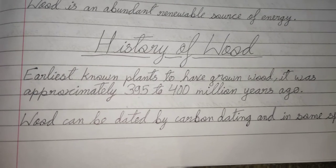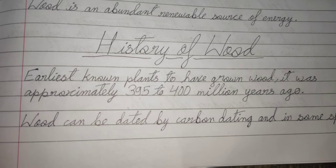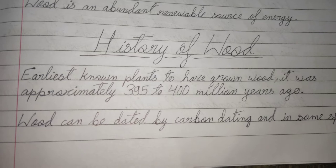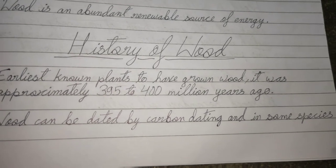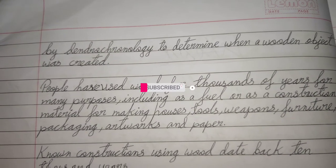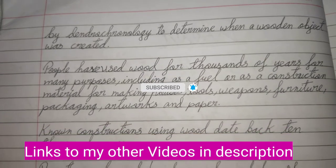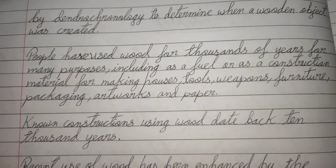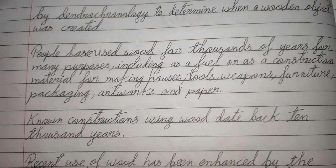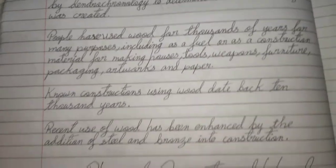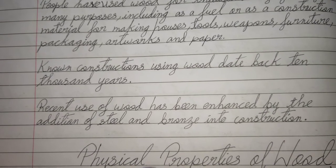The earliest known plants to have grown wood existed approximately 395 to 400 million years ago. Wood can be dated by carbon dating and, in some species, by dendrochronology to determine when a wooden object was created. People have used wood for thousands of years for many purposes including fuel, construction material, making houses, tools, weapons, furniture, packaging, artworks, and paper. Known constructions using wood date back to 10,000 years. Recent use of wood has been enhanced by the addition of steel and bronze into construction.